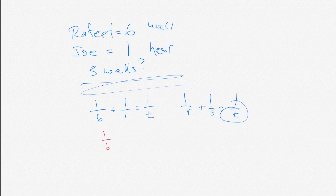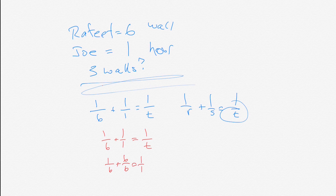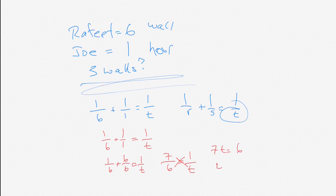We have one over six plus one over one equals one over T. The common denominator on the left side is six, so we have one over six plus six over six equals one over T. That's going to be seven-sixths equals one over T. We cross-multiply: we get seven T equals six. So T equals six-sevenths. Together, it takes them six-sevenths of an hour to do one wall.